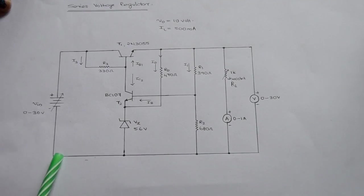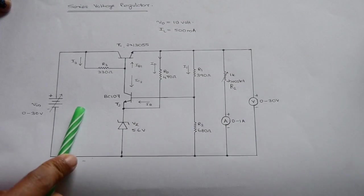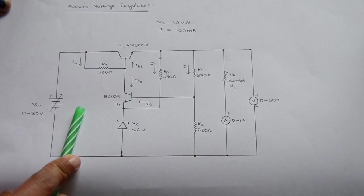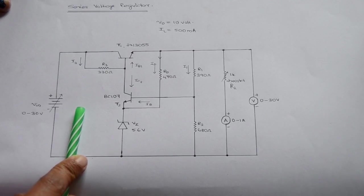When there is a decrease in the output voltage, the base voltage of T2 will decrease and the emitter potential of T1 and T2 will increase. This will again nullify any change at the output. Thus, the output is maintained constant.